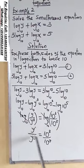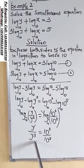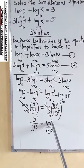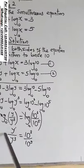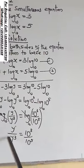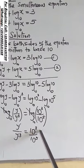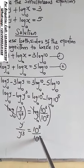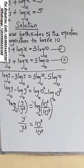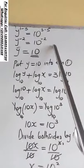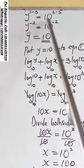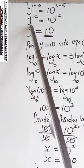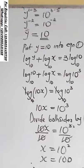The log on both sides cancels, leaving us with y raised to the power 1 over y raised to the power 3, equals 10 raised to the power 3 over 10 raised to the power 5. Applying the law of indices, division returns to minus: y raised to the power 1 minus 3 equals 10 raised to the power 3 minus 5. This gives y raised to the power minus 2 equals 10 raised to the power minus 2. Since the powers are the same, the base must be equal, so y equals 10.